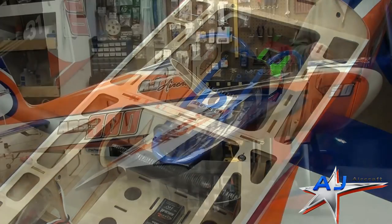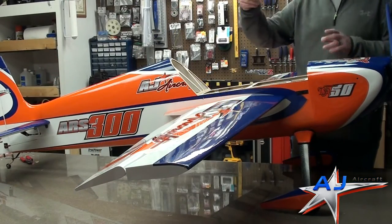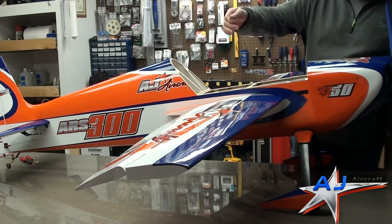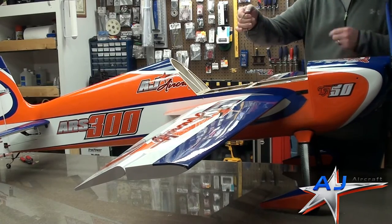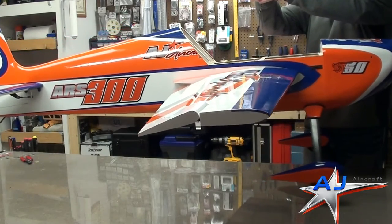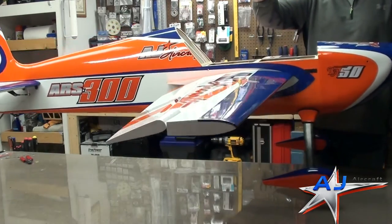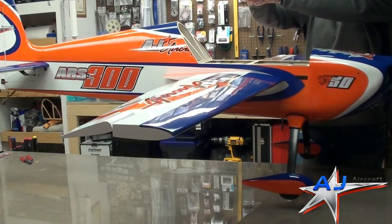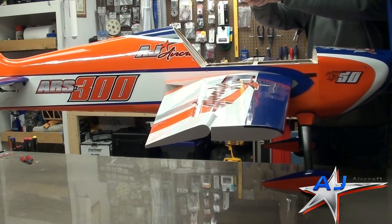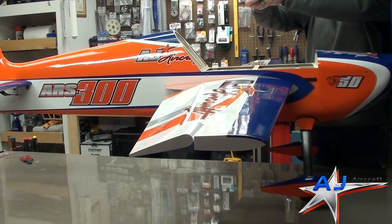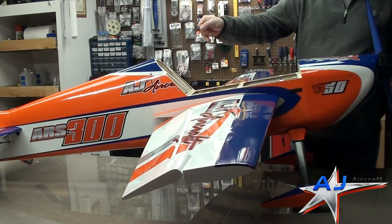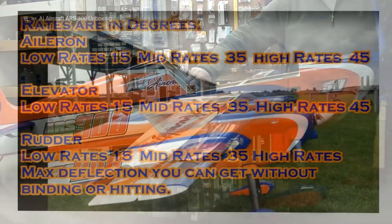I don't put the canopy on when I CG it. I made this little picker-upper thing from a hanger and I put it right on the middle former to pick it up and hang it. As you can see, the CG is really super neutral, and that's more than good enough to fly. From there, I'll make all the adjustments based on how it flies and how it knife edges — that's how you CG it.